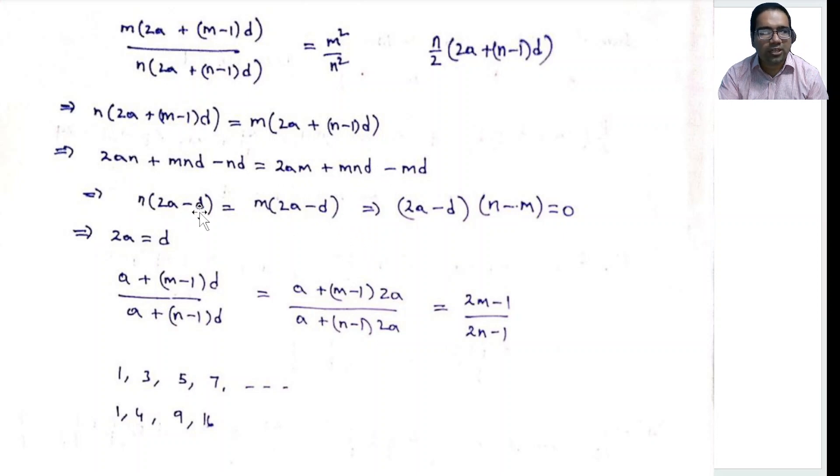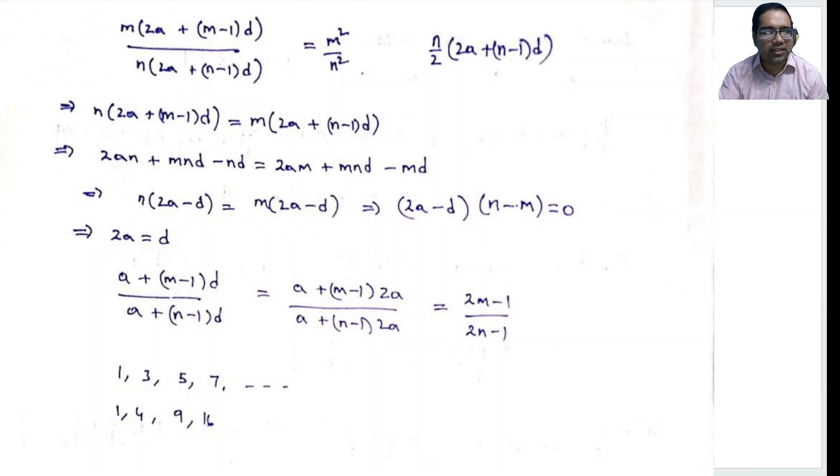(2a - d)(n - m) equals 0. Why it is important is we know that n is not equal to m. If n is m, there is nothing to prove. So n is definitely not equal to m. Then what does this mean to make this equation true? It becomes 2a - d itself should be equal to 0. That means 2a is equal to d. Let us substitute this for 2a equals to d.